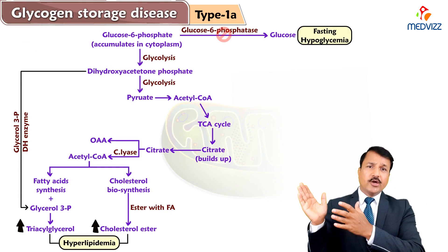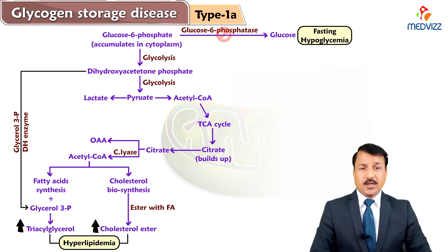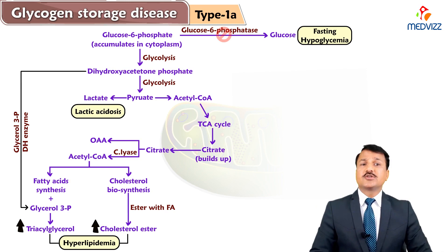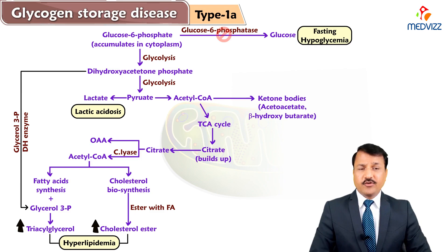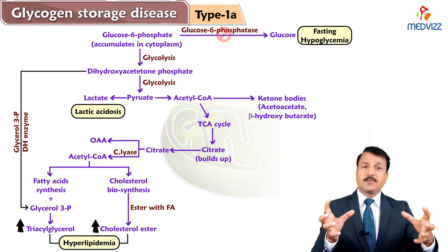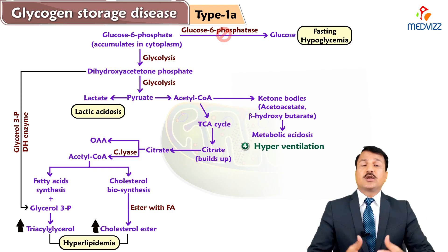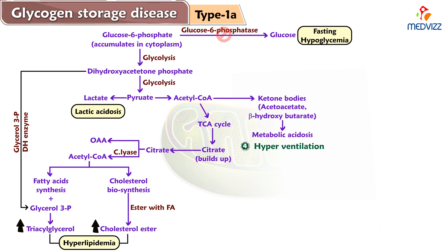Some of the pyruvate, other than going into acetyl-CoA, is diverted into lactate, leading to more lactate accumulation in tissues and ultimately appearing in the blood, giving rise to lactic acidosis. Lactic acidosis, along with ketone bodies from acetyl-CoA — specifically acetoacetate and beta-hydroxybutyrate — contributes to metabolic acidosis. Beta-hydroxybutyrate, lactate, and ketone bodies are all acidic molecules. As a consequence of metabolic acidosis, patients with Von Gierke Disease may show hyperventilation.